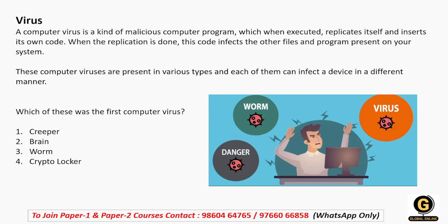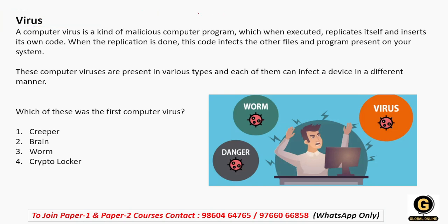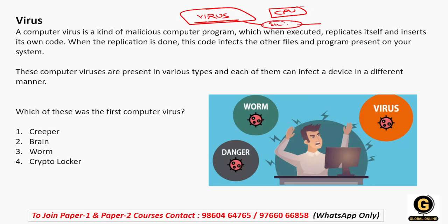Last topic है virus। हमारे computer में कोई ऐसी file आ जाती है जिसकी वजह से computer को नुकसान पहुँच सकता है — वो होता है virus। इसको बचाने के लिए हम computer या mobile में antivirus use कर सकते हैं। Virus की भी एक full form होती है — जैसे CPU की full form है — वो आप comment करके बताइए। Virus क्या करता है — हमारे computer या mobile में आ जाता है और अगर उससे कोई file किसी को भेजते हैं तो virus उसमें भी चला जाता है। इस topic पर एक separate session भी आएगा।